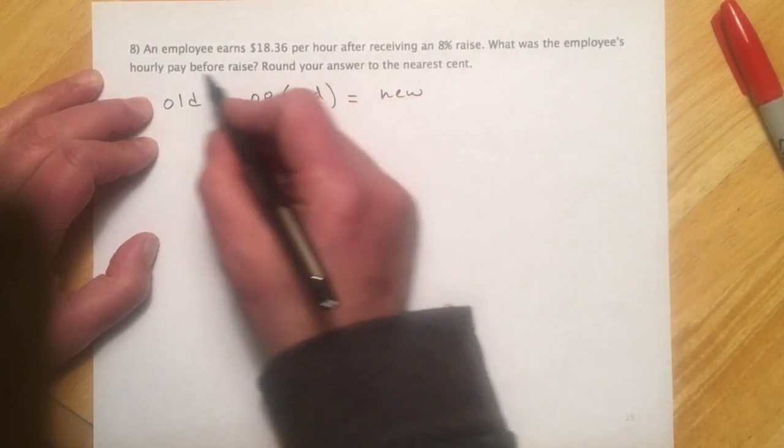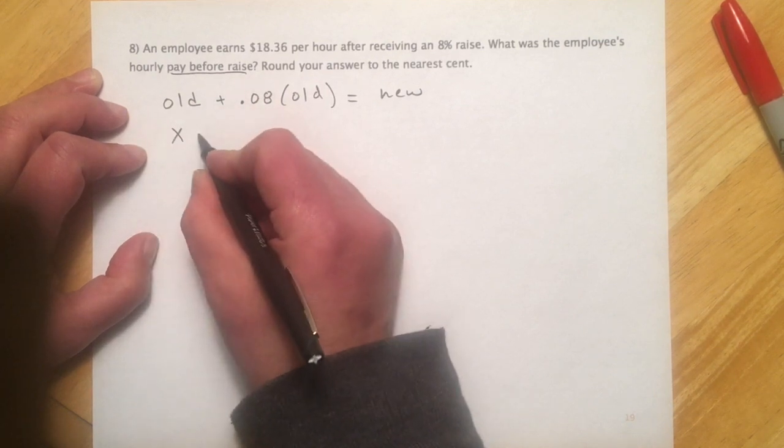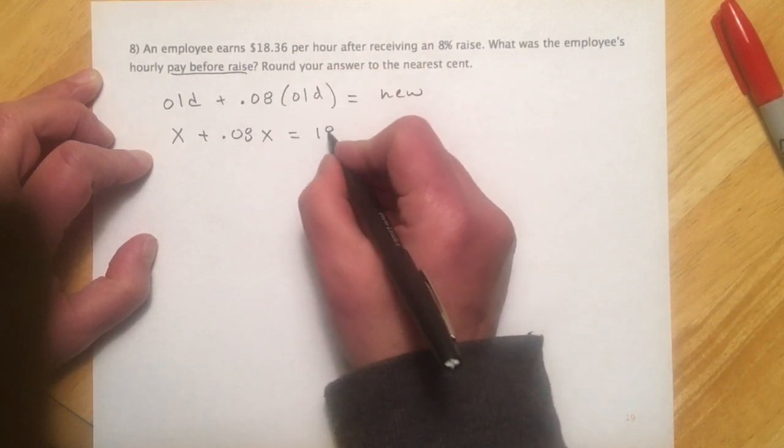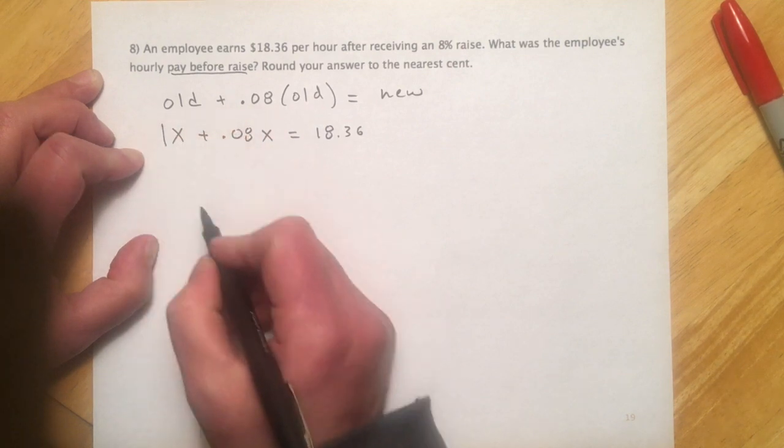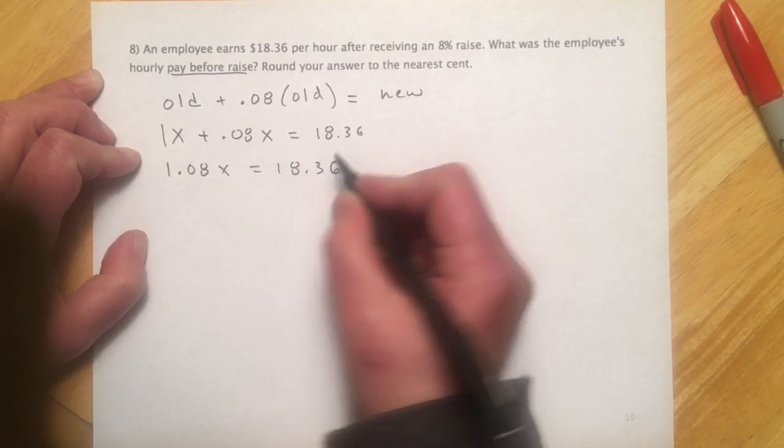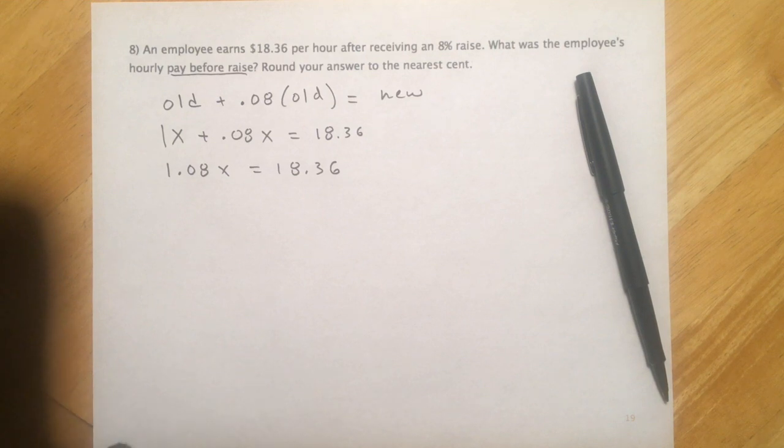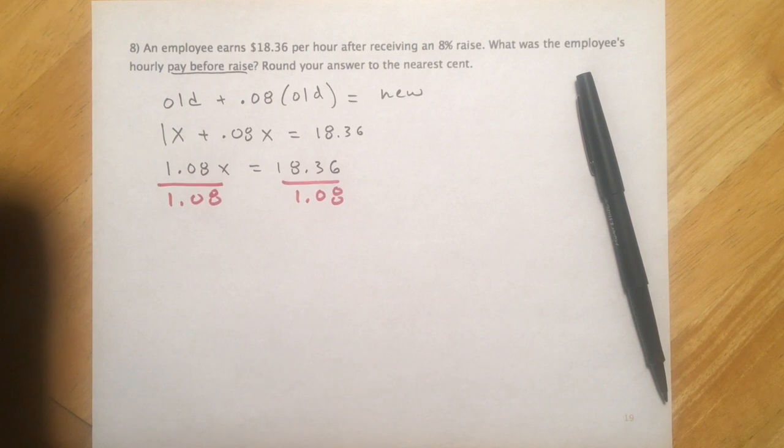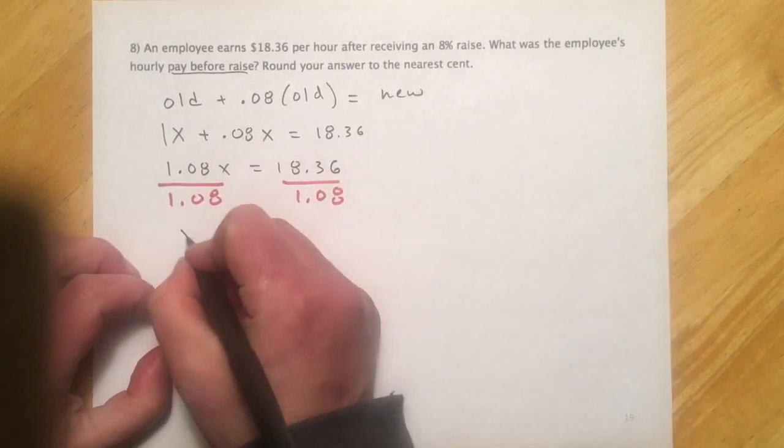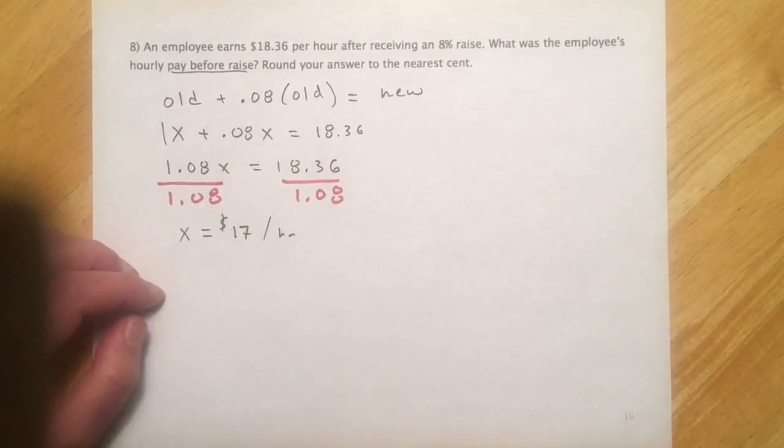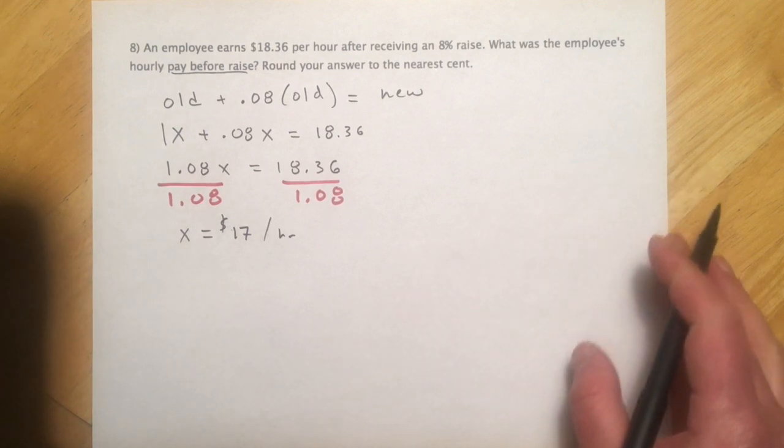So the old salary, that's what we're trying to figure out. So we'll call that 1x plus 0.08 of that old salary that we don't know. And that's going to get us our new salary or hourly wage. Invisible 1 right there. So that is 1.08x equals 18.36. And then I'll divide over the 1.08, and looks like x equals $17 per hour. And that concludes 1.3 applications.